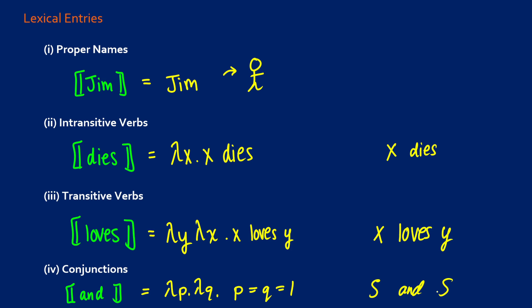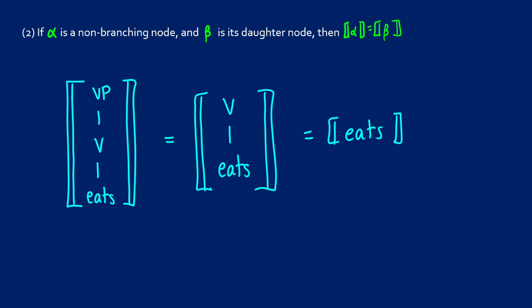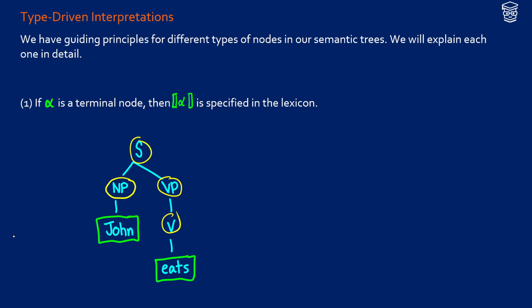So now we're going to be able to put our lexical entries into our trees. So if we go back to our first slide, for John we would be giving it a name just like John because that is what the meaning would be, and for eats this is an intransitive verb, it'd be lambda x dot x eats.